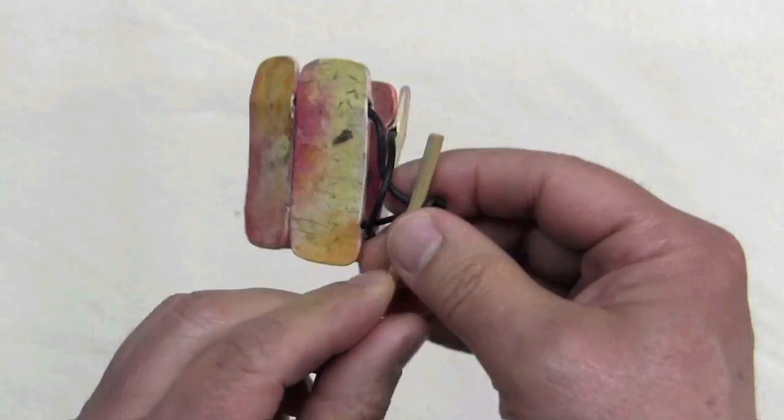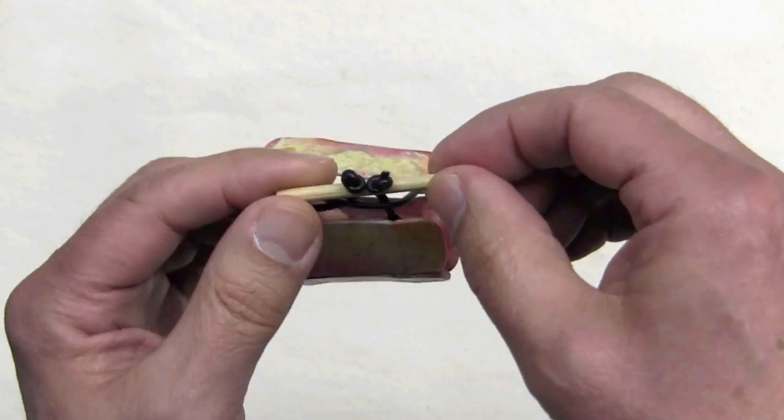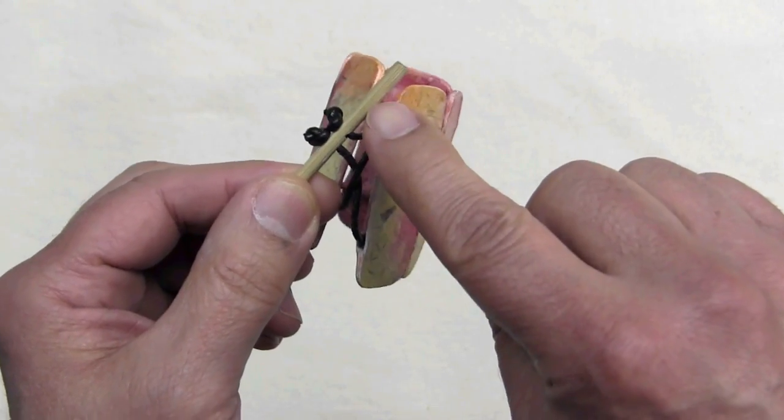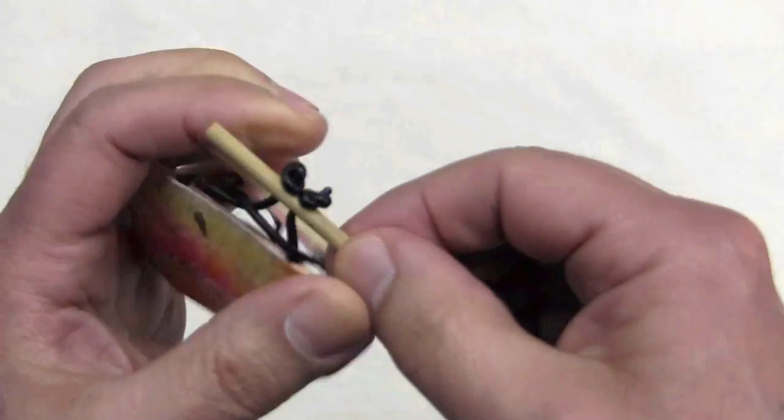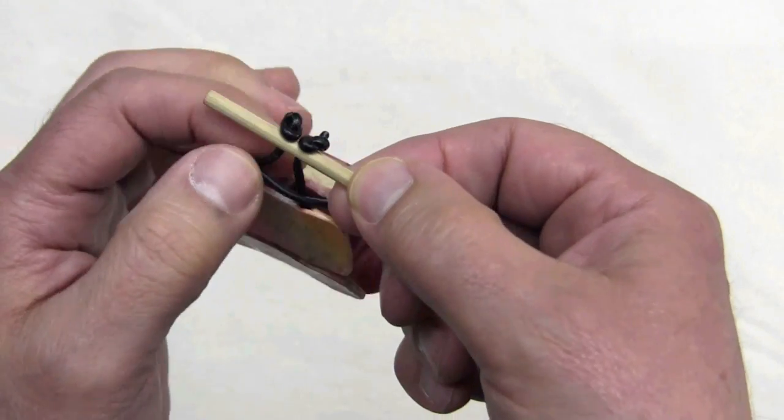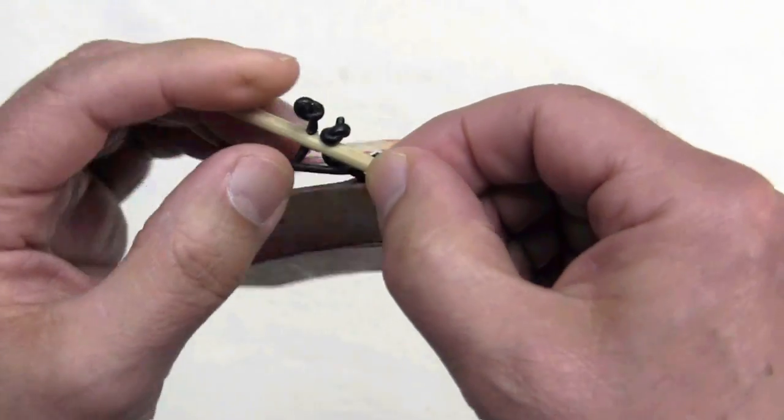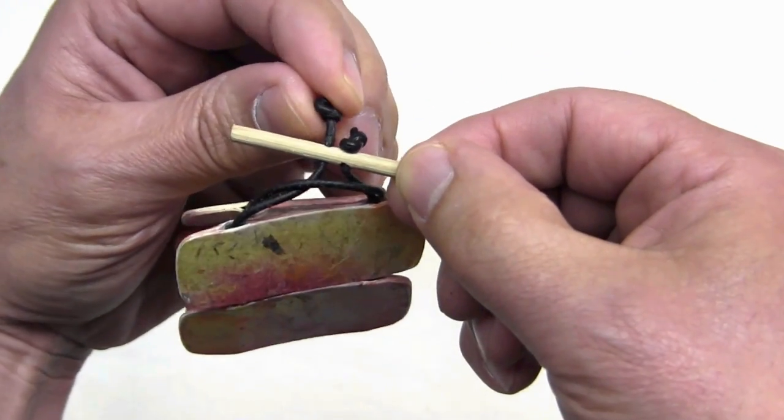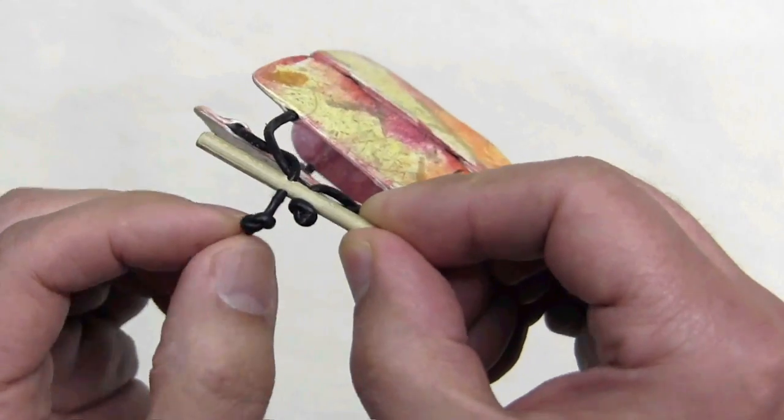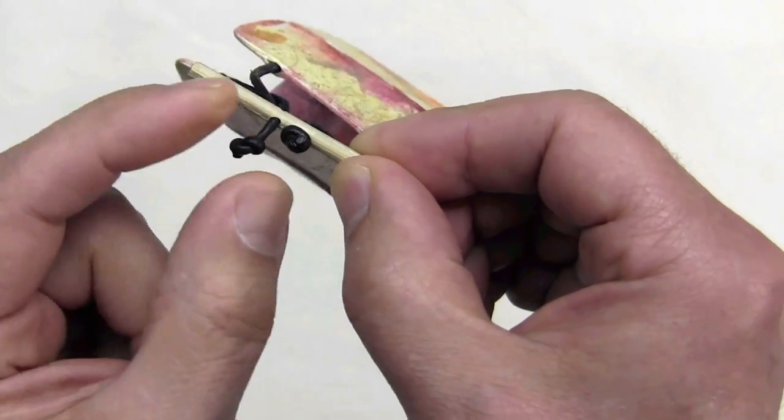When I originally pointed out that I used the shish kebab stick here, I mentioned that it was glued in place. What I meant is the knots that I tied at the end of the cord have been glued with crazy glue.